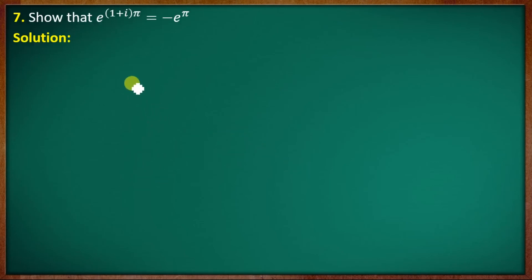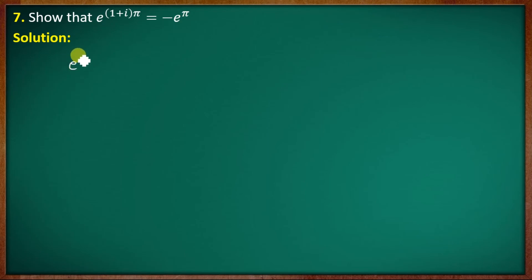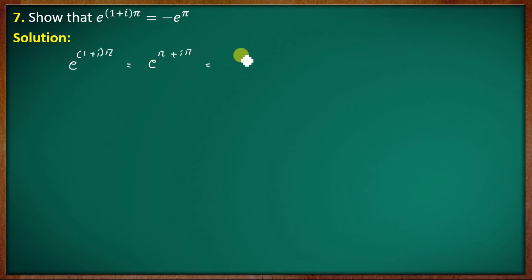Seventh problem: show that e raised to (1 + iπ) equals minus e raised to π. We write e raised to (π + iπ) equals e raised to π times e raised to iπ, which equals e raised to π times (cos π + i sin π).